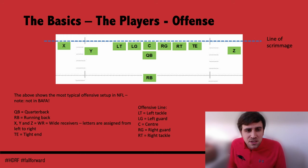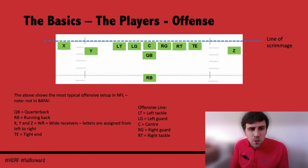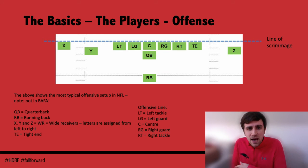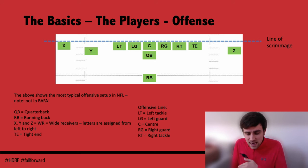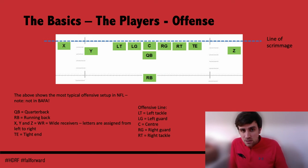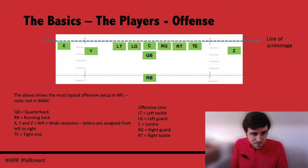Moving on to positions, I first want to touch upon the line of scrimmage because it's quite important to understand positions in relation to it. The line of scrimmage is where the ball is placed — it's an imaginary line that runs the width of the field. It marks where the offence can't cross before the play starts, and also where the defence can't come over before the play either.